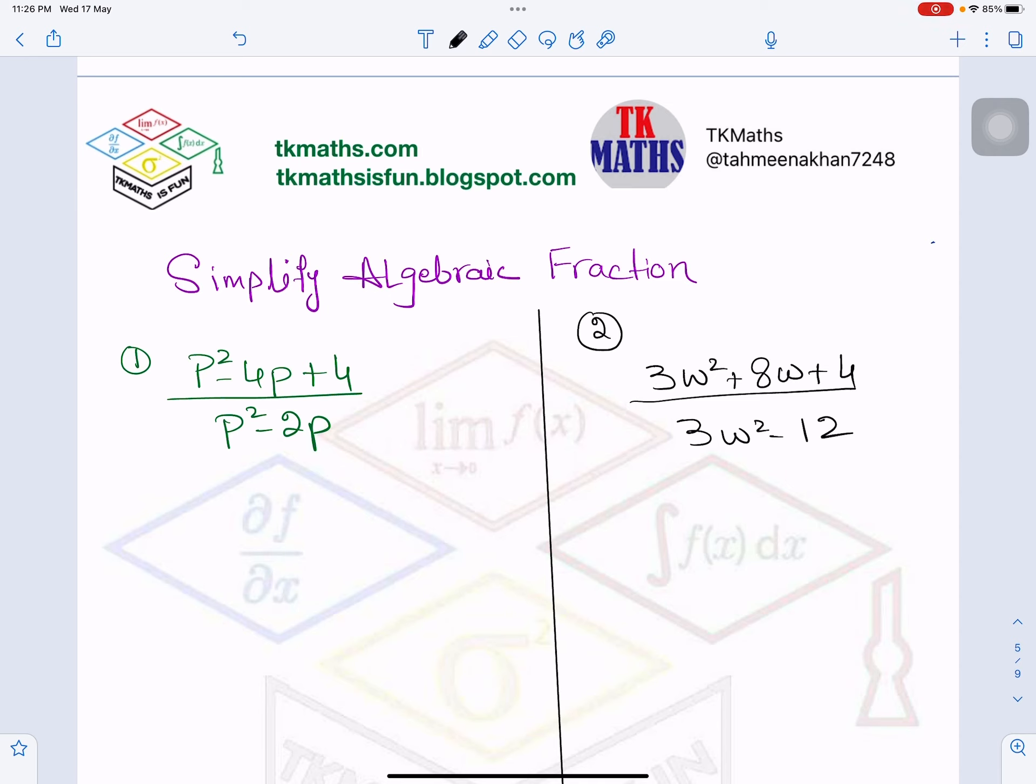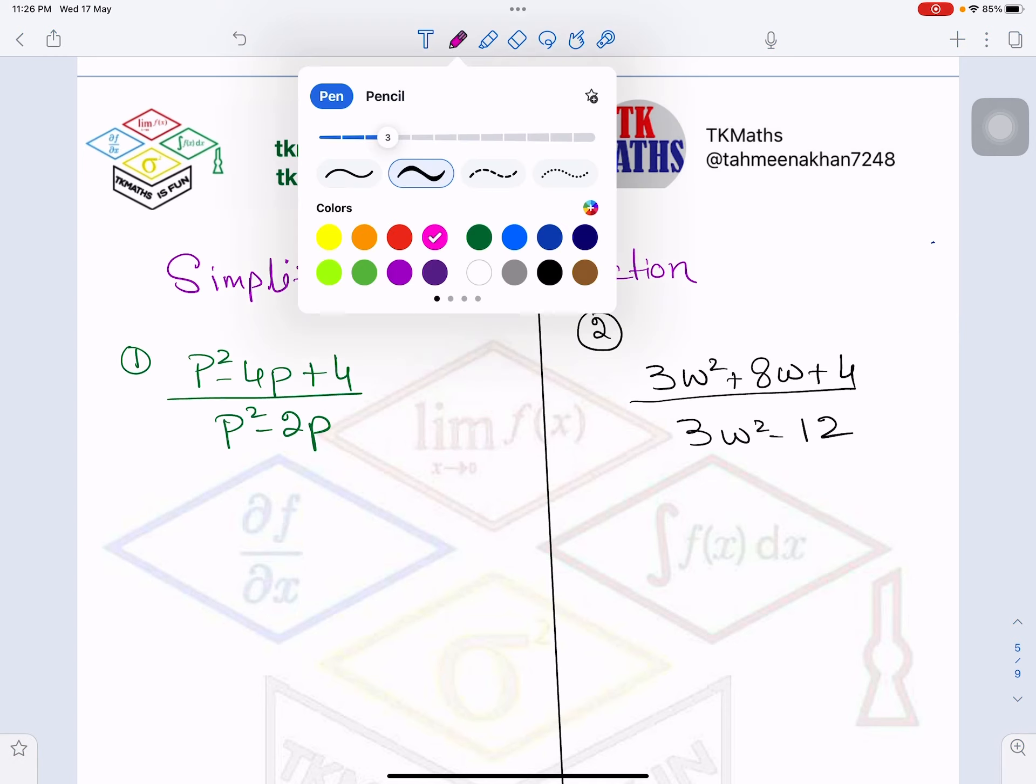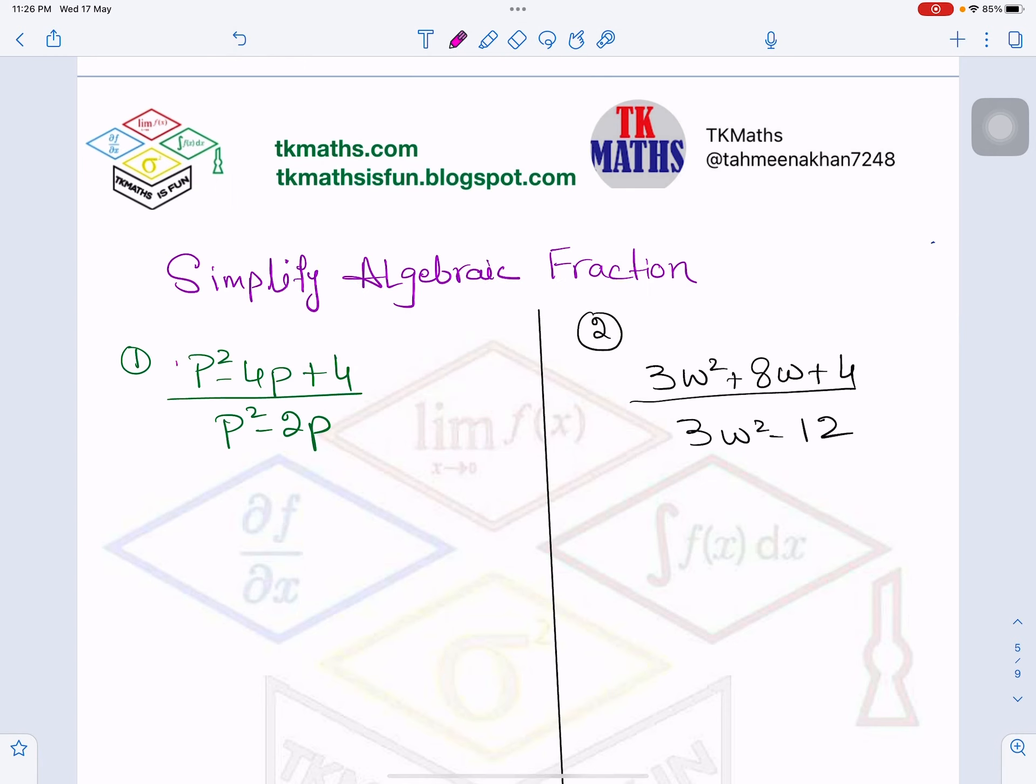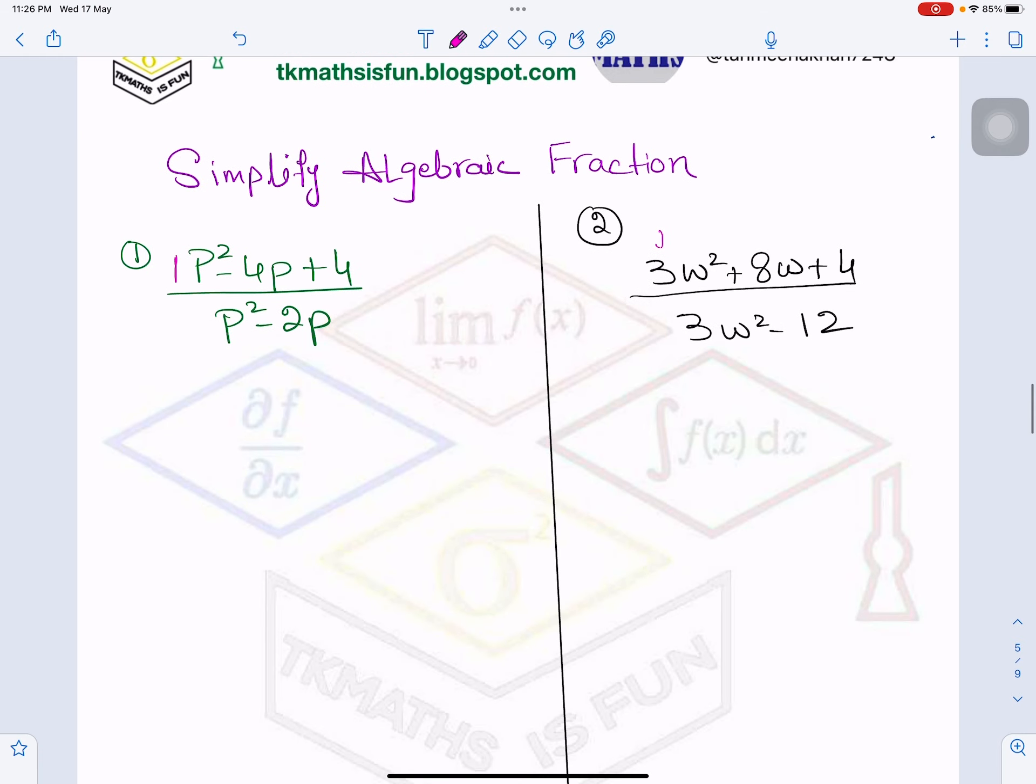In the first one, if you see, the coefficient of P² is 1, right? And here the coefficient of W² is 3. That is the only difference. The method will remain the same. So let's start with example 1 first.